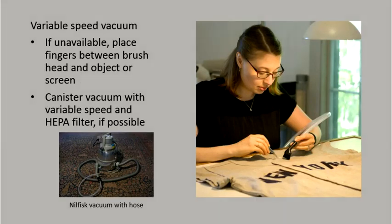Ideally, use a vacuum with variable suction — an opening that can be opened and closed so that the strongest suction can be used for the strongest textiles and weaker suction for more fragile ones. When I vacuum silk, I pretty much use the lowest suction possible at all times. If your vacuum does not have variable suction, use your fingers to separate the nozzle from the screen for fragile textiles. This must be done slowly and carefully so that the textile is not sucked up into the vacuum or scraped or ripped by the screen.